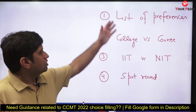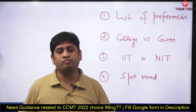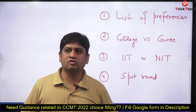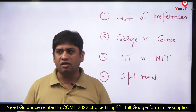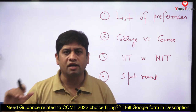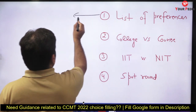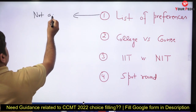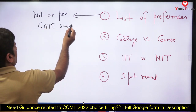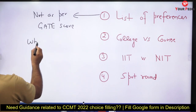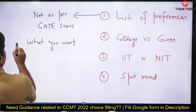There are four important things to discuss related to CCMT. The first is the preference list. Many students think the preference order should be based on their GATE score — that is a mistake. This preference is not based on your GATE score; it is based on what you actually want.